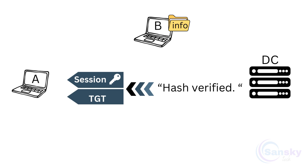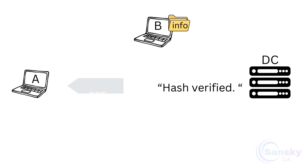The DC then provides A with a session key used for encryption and a Ticket Granting Ticket (TGT), which allows A to request services within the domain without re-entering the NTLMV2 hash. With the TGT, the NTLMV2 hash no longer needs to be sent to the DC for future requests.